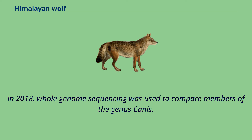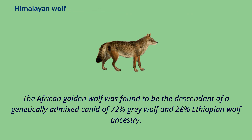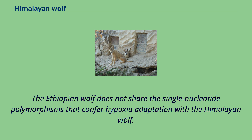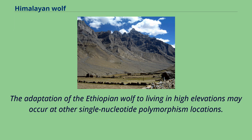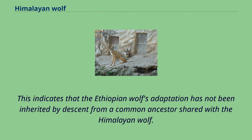In 2018, whole genome sequencing was used to compare members of the genus Canis. The African golden wolf was found to be the descendant of a genetically admixed candidate of 72% gray wolf and 28% Ethiopian wolf ancestry. The Ethiopian wolf does not share the single nucleotide polymorphisms that confer hypoxia adaptation with the Himalayan wolf. The adaptation of the Ethiopian wolf to living in high elevations may occur at other single nucleotide polymorphism locations, indicating that the Ethiopian wolf's adaptation has not been inherited by descent from a common ancestor shared with the Himalayan wolf.